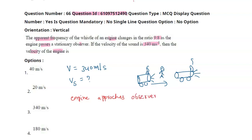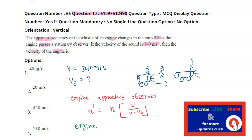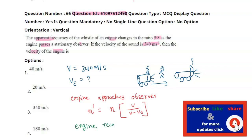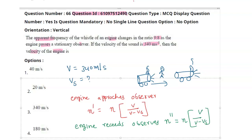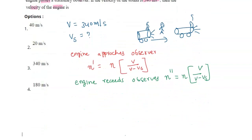When the engine approaches the observer, we apply the Doppler formula for apparent frequency: n' equals n into v by v minus vs. In the second case, the engine recedes from the stationary observer, and the apparent frequency received is n' equals n into v by v plus vs.